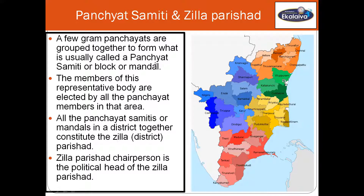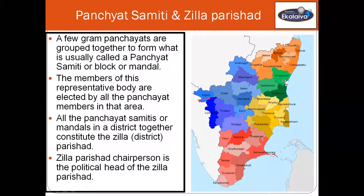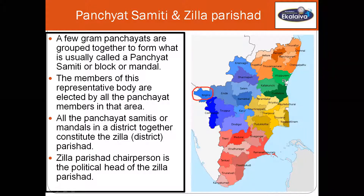Gram Panchayats are grouped together to form what is usually called a Panchayat Samiti, block, or mandal. The members of this representative body are elected by all the Panchayat members in that area. All the Panchayat Samitis or mandals in a district together constitute the Zilla Parishat, whose chairperson is the political head. For example, taking the district of Nilgiris: the state is divided into blocks, every block is divided into Gram Panchayats, and the blocks together form the Zilla. Zilla is the first tier, Panchayat Samiti is the second tier, and Gram Panchayat is the third tier.